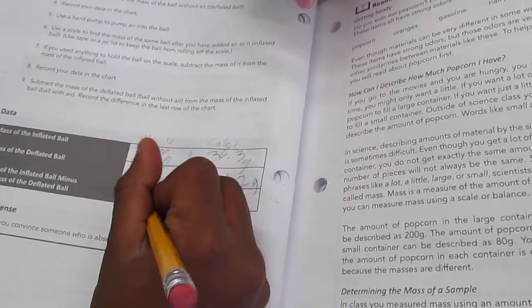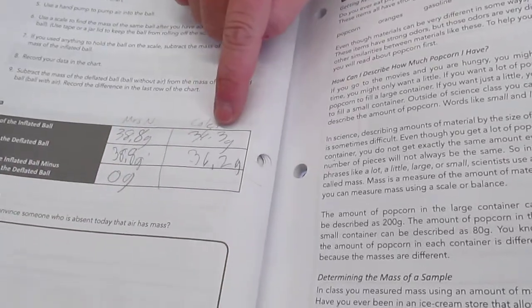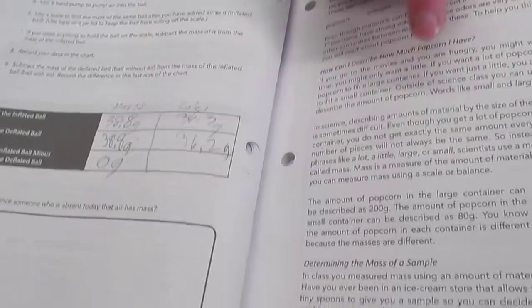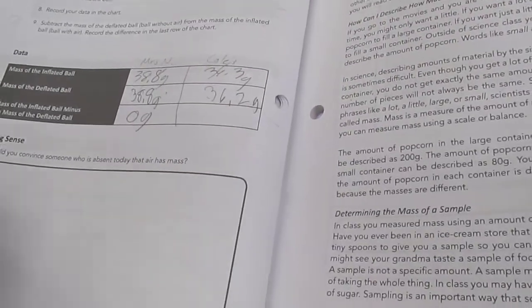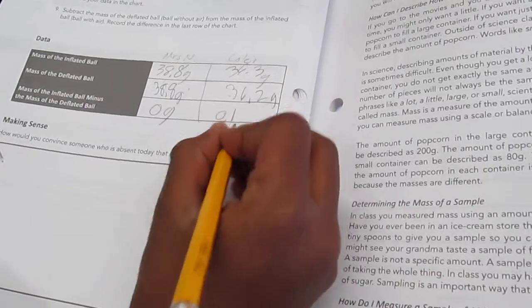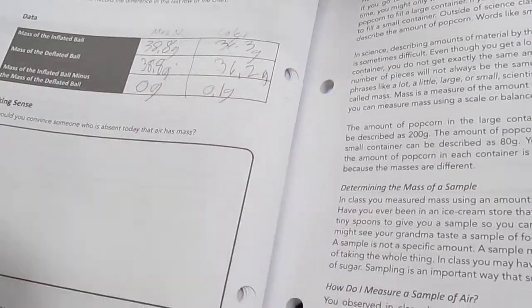So, put zero grams for Mrs. N's. But then, for Cole's, what is 36.3 minus 36.2? .1. .1, one-tenth of a gram. So, decimal, yep, 1 gram. Okay.